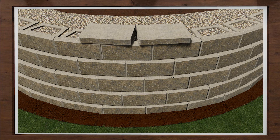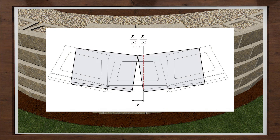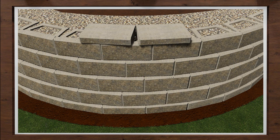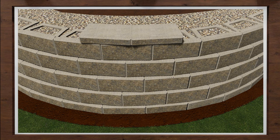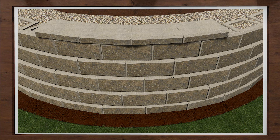Cap your curve by placing two AB capstones with the back of each block tight together so there is a gap in the front. Measure the distance of the gap, divide this distance in half, and measure in and mark that on the back of each cap to know how much to remove. Draw a line from the front corner of the block to the mark on the back. Using a saw with a diamond blade, cut accordingly. Place the modified caps back on the wall. Repeat this process as you move along the curve and secure caps in place with a flexible concrete adhesive.